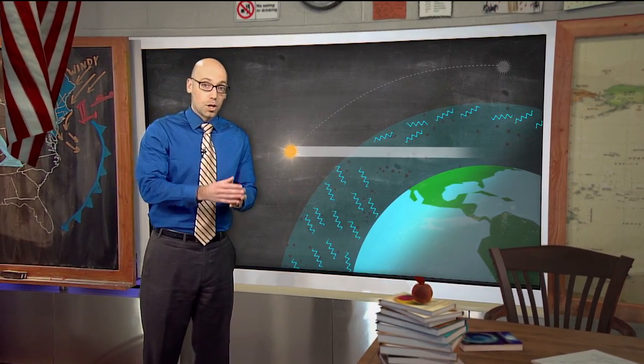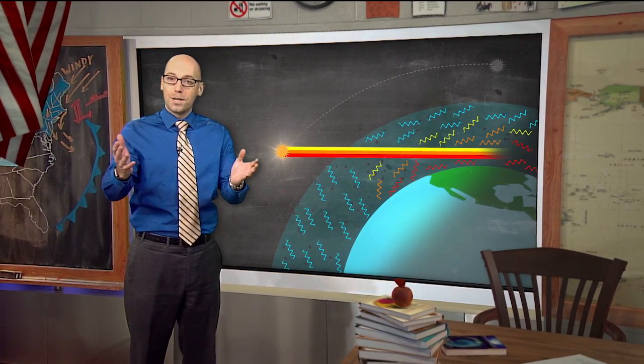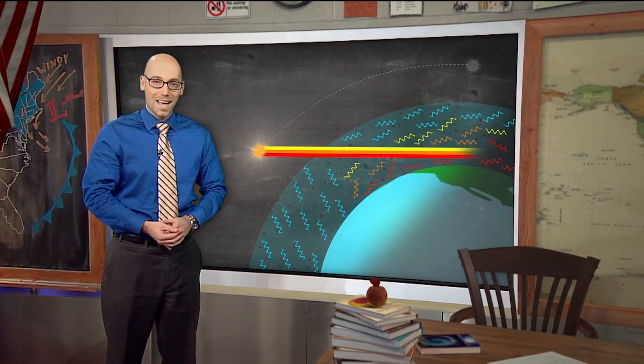particles along the way. This gives the longer wavelength reds, oranges, and yellows more of an opportunity to be scattered, so those are the colors we see late in the day.